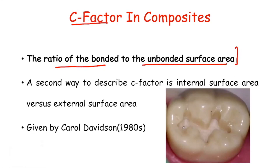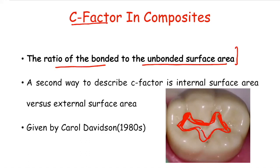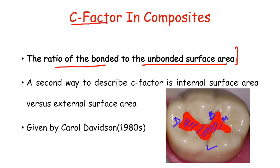Suppose this is the class 1 cavity. When we place the composite restoration, it will be bonded to the distal wall, mesial wall, buccal wall, and lingual wall, along with the pulpal floor. So in this class 1 composite restoration, the composite is bonded to 5 internal walls — mesial, distal, buccal, lingual, and the pulpal floor — and it is unbonded on the occlusal surface. The ratio of bonded (5 walls) to unbonded (occlusal surface) gives the C factor, which comes out to be 5 in case of class 1 cavity.